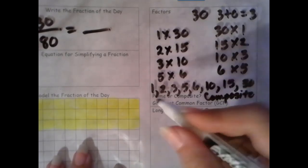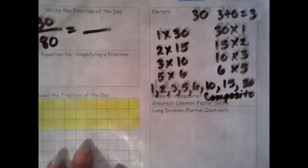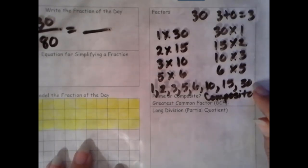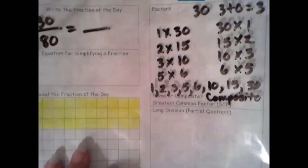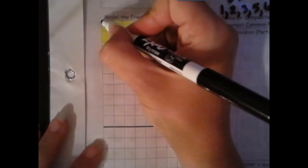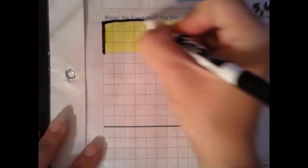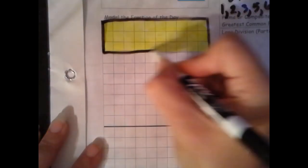But we need to figure out which one of these is the greatest common factor. Which one works for both 30 and 180. Let's start with our largest one. And if that doesn't work, we'll keep going until we find one that does. Let's start with 30. Remember, your groups of 30 do not have to look like mine. They just have to have 30 in each.